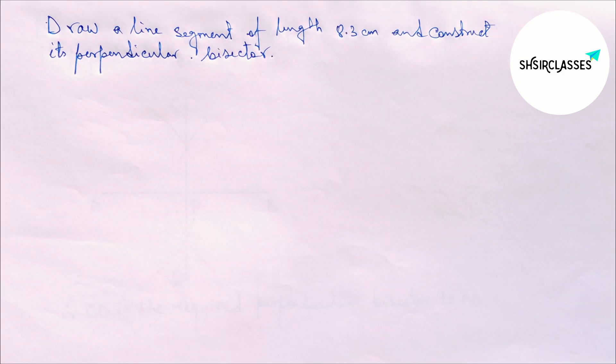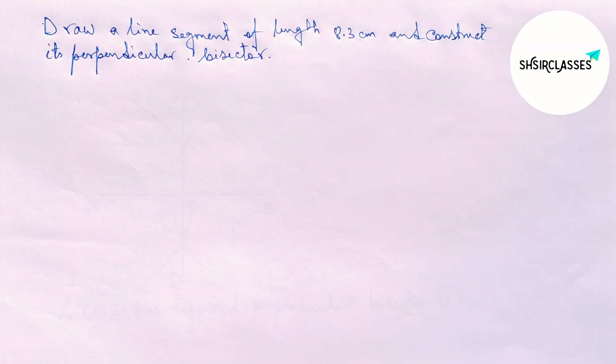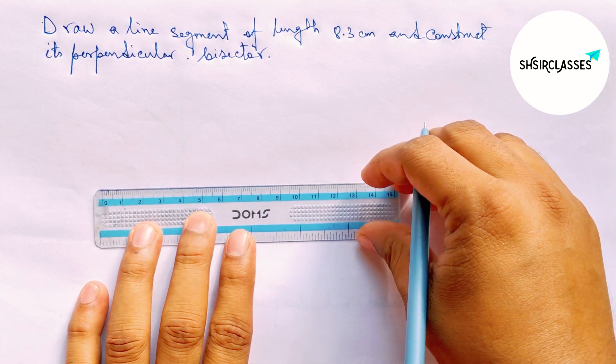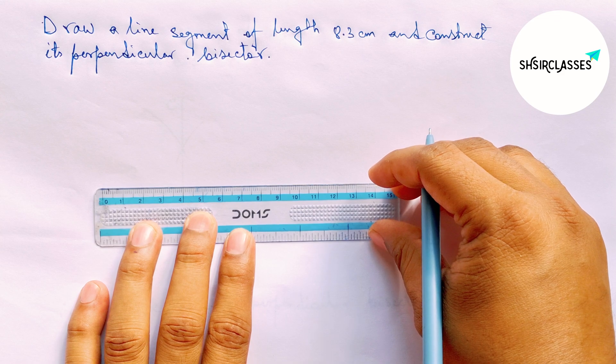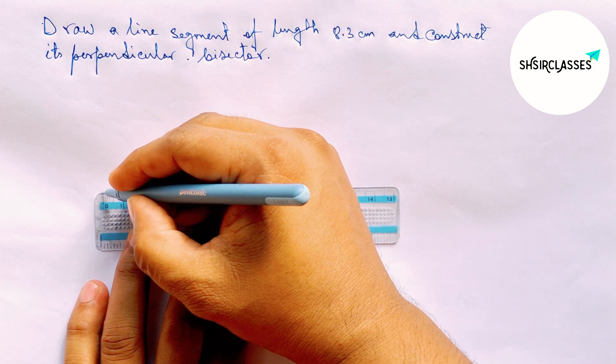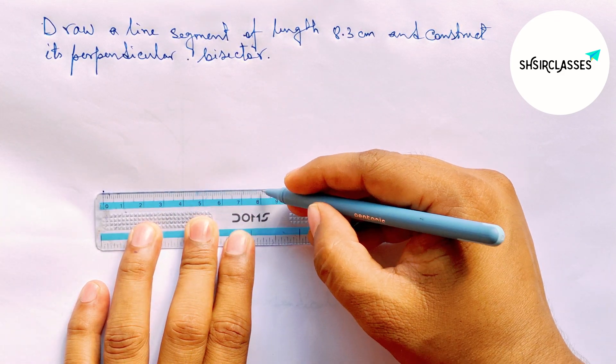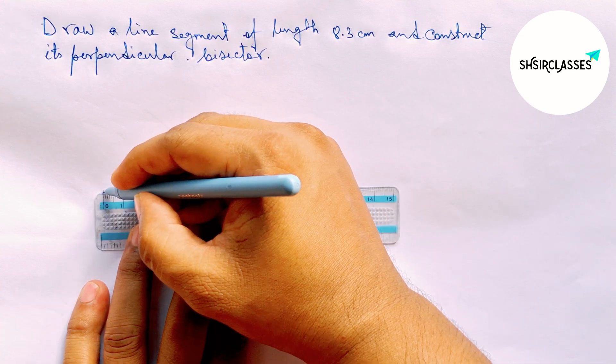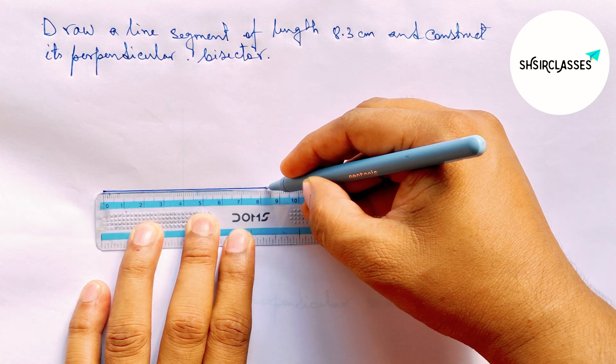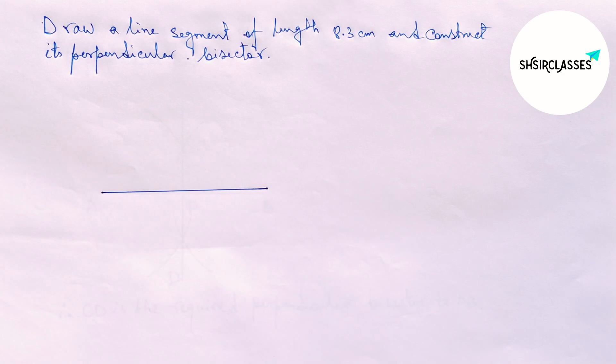Let's start the video. First of all, let us draw here a line segment of length 8.3 centimeter. So here, this is marking zero, then counting here eight, then counting three. So this is a 8.3 centimeter line segment. Now labeling here A and B.